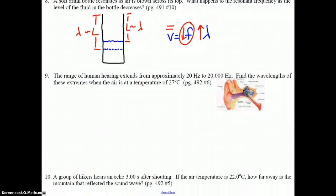The range of human hearing extends from approximately 20 hertz to 20,000 hertz. Find the wavelengths of these extremes when the air is at a temperature of 27 degrees Celsius.